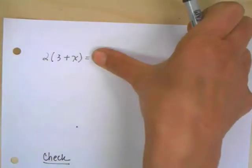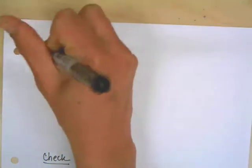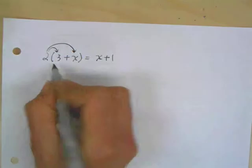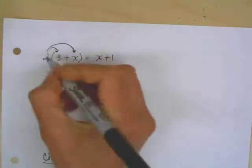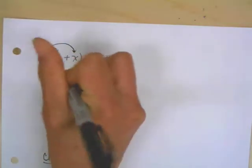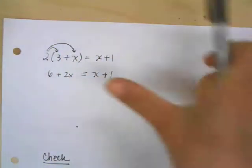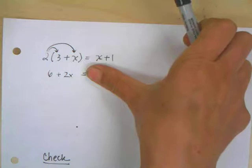Once again, I like to see, are there things on the left-hand side that I can simplify? Yes, I can see that I have the distributive property. So I'm going to use just little arrows to show me what I need to do. So 2 times 3 is 6, and then I have plus 2x. And that's equal to x plus 1.